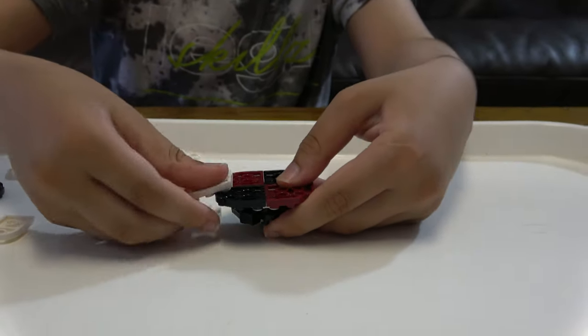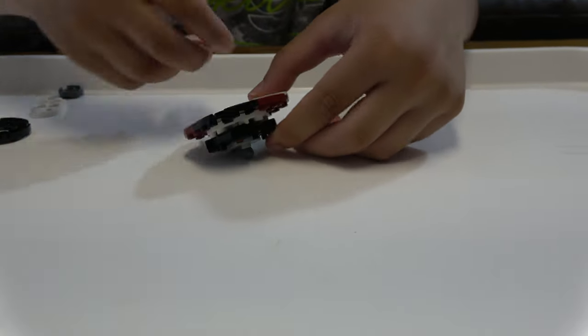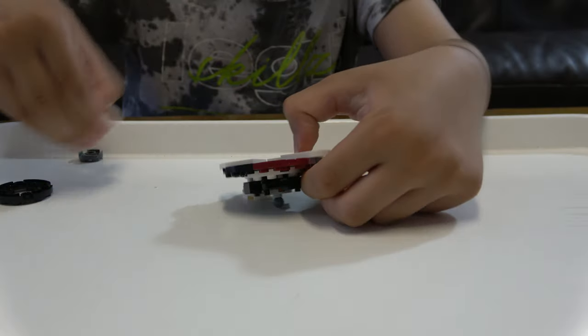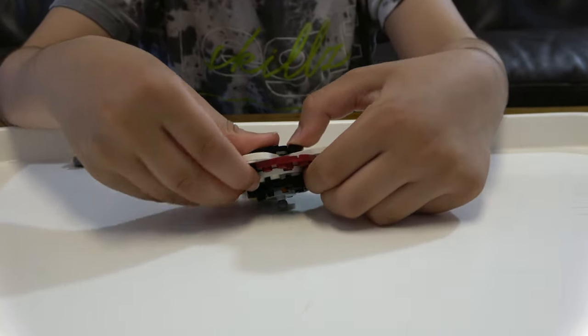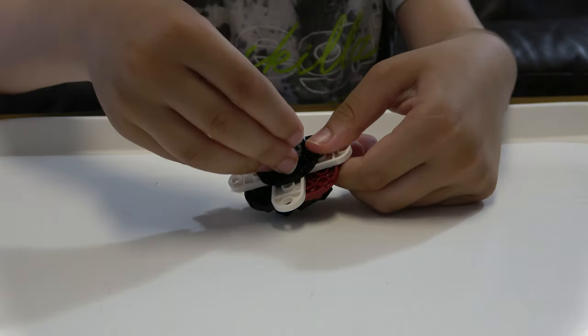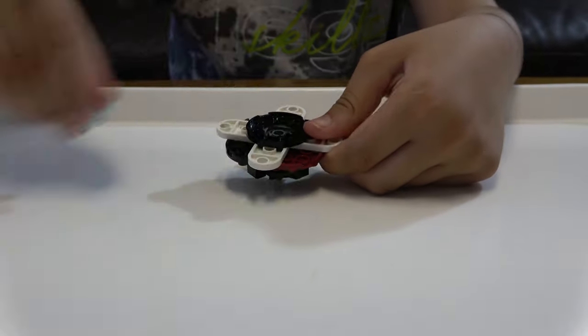And then four of these on each side to make the white effect of the actual Beyblade. And then we're going to place this onto here, this underneath like that.